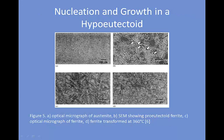In a hypo-eutectoid steel, pro-eutectoid ferrite will form before any cementite does. Like pearlite, this forms at grain boundaries of the original austenite, due to the lower energy required to form at a grain boundary and the increased diffusion compared to within the grain. With pro-eutectoid ferrite, however, cementite doesn't form until below the eutectoid temperature. If cooled too quickly, less pro-eutectoid ferrite may form than would happen if cooled slowly. In this case, more eutectoid ferrite would form later to make up for the loss, satisfying the phase diagram with exactly as much total ferrite. After the isotherm is passed, the pro-eutectoid ferrite and the pearlite will nucleate, grow, and impinge on each other.